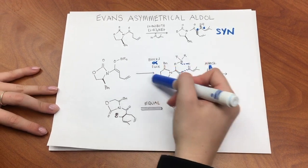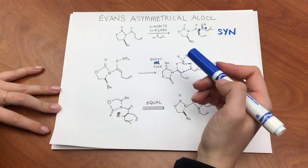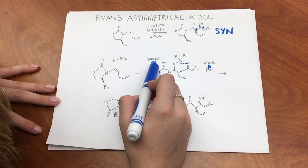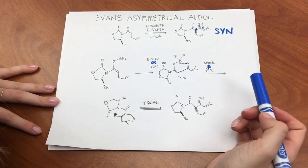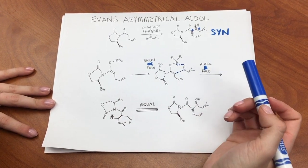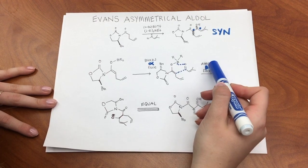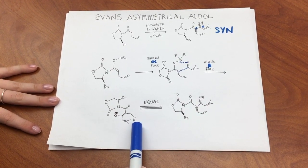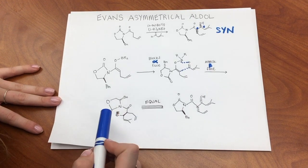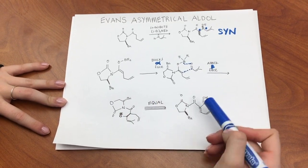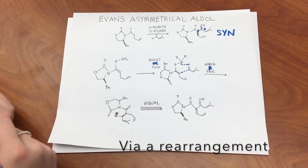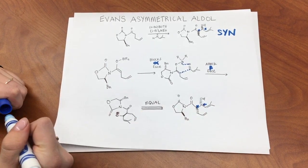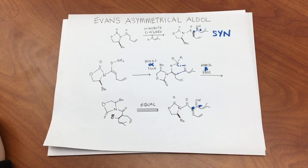This represents an open transition state. The BN is blocking the alpha face of this starting material, and therefore, in order for the reaction to be complete, it must attack at the beta face. This is the product shown through the opposite chiral auxiliary, which is equivalent to the syn product seen here with the two new stereocenters.